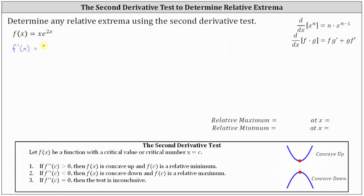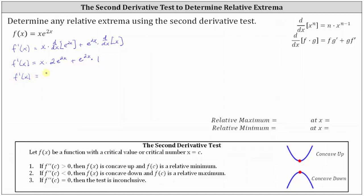f prime of x is equal to the first function x times the derivative of the second function — the derivative of e to the power of 2x — plus the second function e to the power of 2x times the derivative of the first function x. This gives us f prime of x equals x times e to the power of 2x times 2, plus e to the power of 2x times 1. Simplifying, we have f prime of x equals 2x·e to the 2x plus e to the 2x.